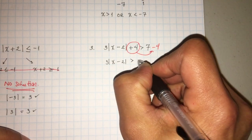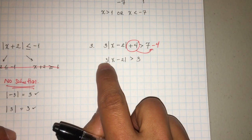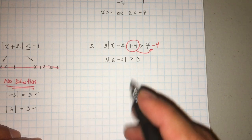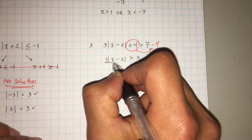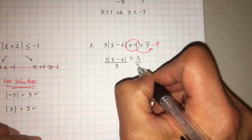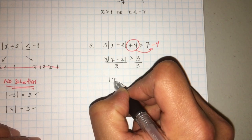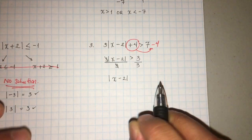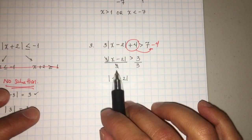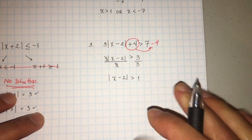Absolute value of x minus 2 — 7 minus 4 is 3. What do I do now? You undo the 3. Well, the 3 is right next to the absolute value, so you're going to divide. Ahora tenemos que deshacernos del 3 — el 3 está pegadito al valor absoluto. Para deshacernos de multiplicación hacemos lo inverso, que es división. Are we dividing by a negative? No, we're not. So we're just going to leave it the same. 3 divided by 3 is 1.